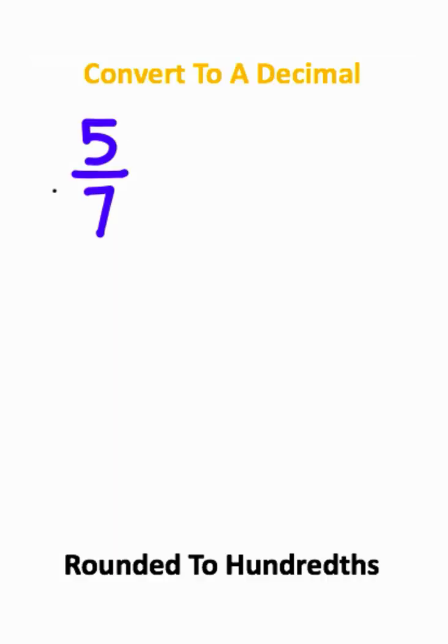Here's how you can convert fractions to decimals. 5 over 7 is the same thing as 5 divided by 7.